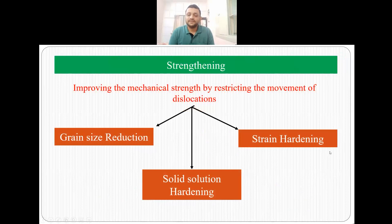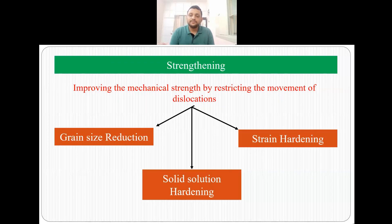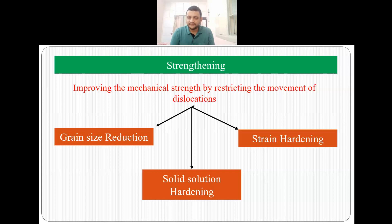Now what is strengthening, or what do we really mean when we use the word strengthening? It means we are trying to improve the mechanical strength of the materials. We do that by restricting the dislocation movement, since the movement of dislocation leads to slip which leads to plastic deformation. So if by some means we can restrict this dislocation movement, we can promote strengthening in the material. This can be done by three different methods: grain size reduction, solid solution hardening and strain hardening.